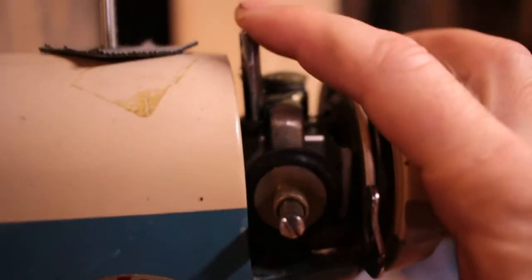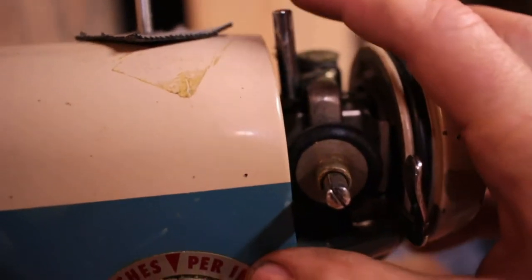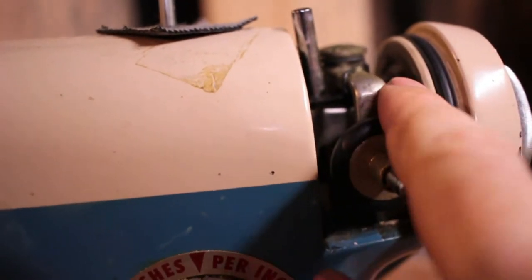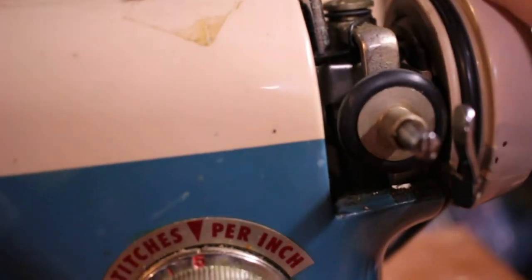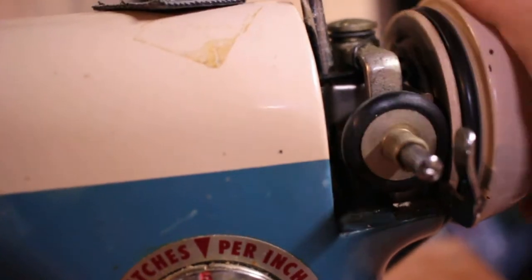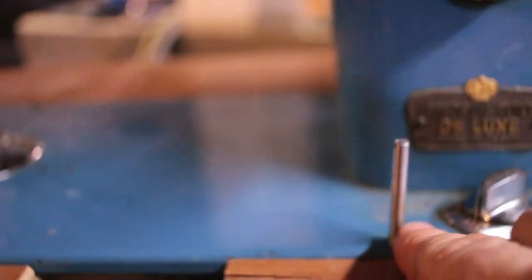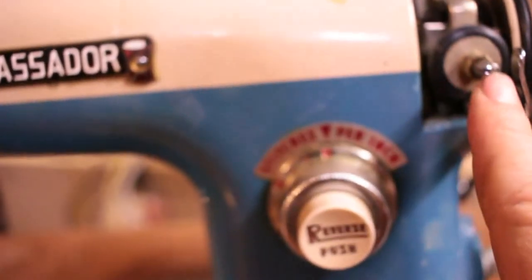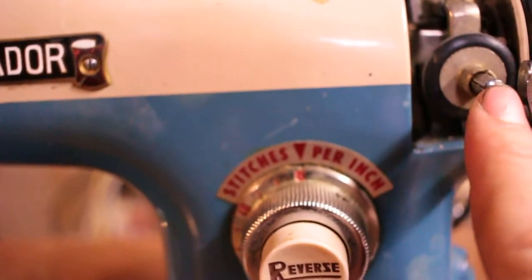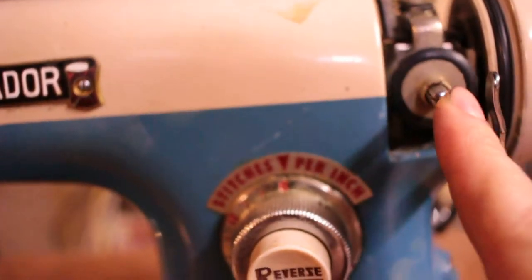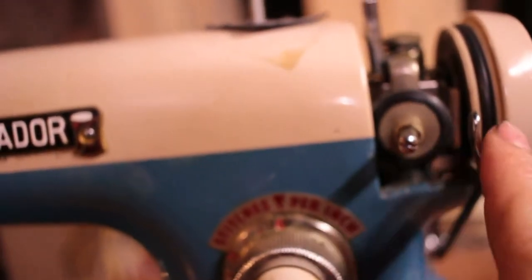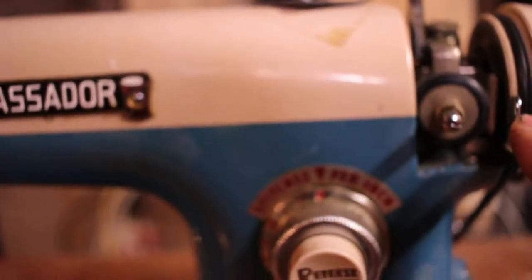Over here, we have our bobbin winder. It's pretty simple. This thing just clamps in. Pushes in. This rubber wheel against the back there. Then that whirls around at a gazillion miles an hour. Wraps up the thread. I think the thread is supposed to go here, around there, and up to a bobbin which you put on there. And it winds up. Then when it gets full, it bumps against this piece, pushes it away, or stops it from spinning. And we're done.